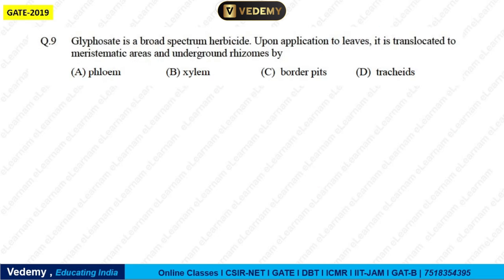Next question: Glyphosate is a broad-spectrum herbicide. Upon application to the leaves, it is translocated to the meristematic area and underground rhizome. The question asks through which tissue it is translocated. Options are phloem, xylem, broader peat, and rickets. The answer is phloem — it is a type of herbicide that, when applied, moves with the help of phloem. Answer will be A.